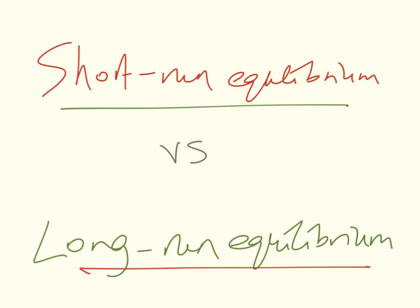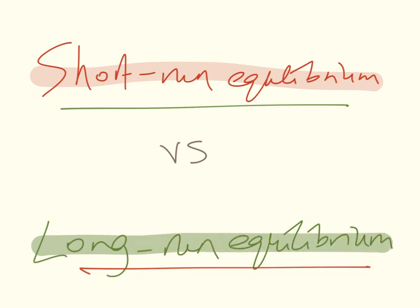When it comes to the monetarist or the new classical model, we have to distinguish between when the economy is experiencing its macroeconomic short-run equilibrium versus its macroeconomic long-run equilibrium. In macroeconomic analysis, the short-run is the period of time where the prices of the factors of production, specifically the wages for labor, are fixed and do not change. In the long run, things are more flexible and they do change.